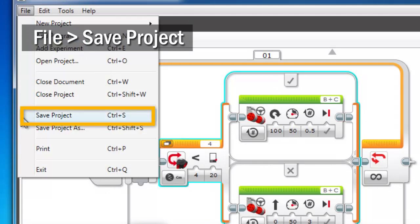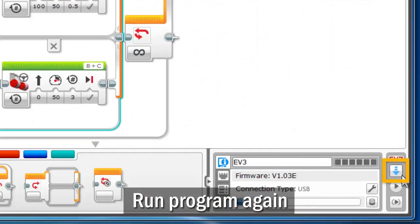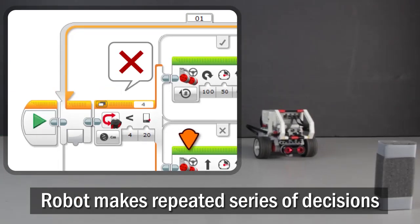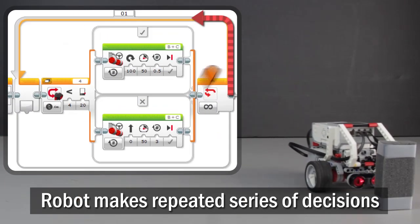Save your program and run it again. The robot will now make a repeated series of decisions. As the robot runs, place an object in front of it.